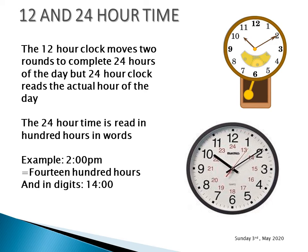The 24-hour time is read in hundreds of hours. For example, when it is 2 PM, the 12-hour clock has completed its first round and is 2 hours into the second round, so it is the 14th hour of the day. The 24-hour clock says 1400 hours. In digits it is written as 1400, and in words it is called fourteen hundred hours.